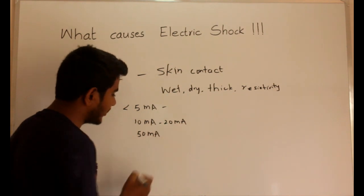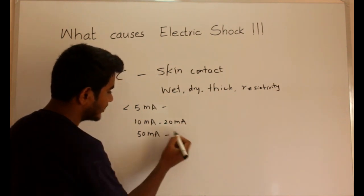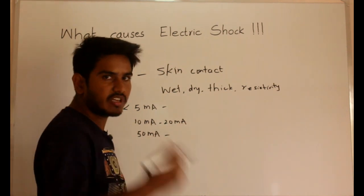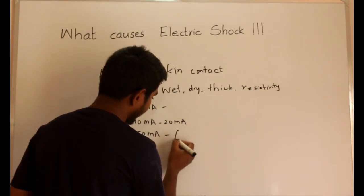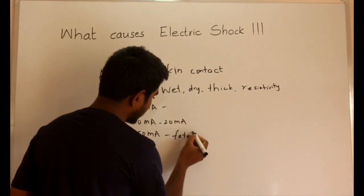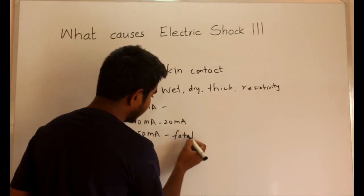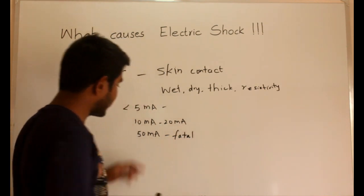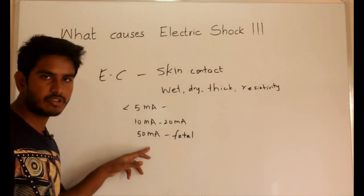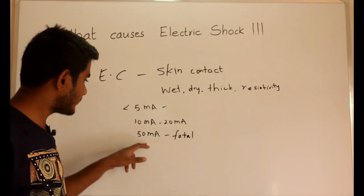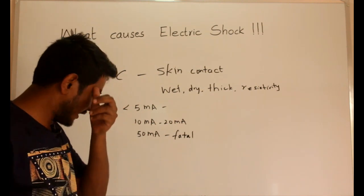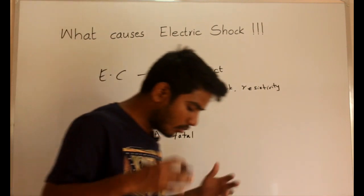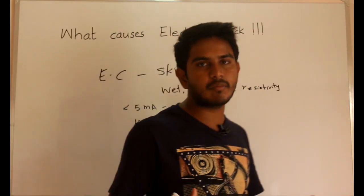So 10 milliamperes to 20 milliamperes is potentially dangerous. At 50 milliamperes or above, the consequences are fatal. So the consequence would be fatal when the current flowing through a human body is 50 milliamperes or more. Let us now see how current kills rather than voltage.